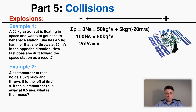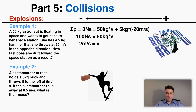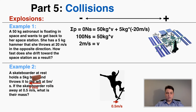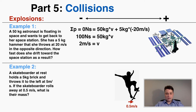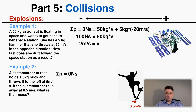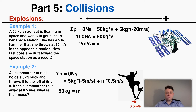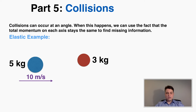Example two: a skateboarder at rest holds a five kilogram brick and throws it to the left at five meters per second. If the skateboarder rolls away at 0.5 meters per second, what is their mass? Again, starting momentum is zero. The final momentum is the brick's mass times velocity plus the skater's mass times velocity. Solving for M gives a mass of 50 kilograms for the skater.